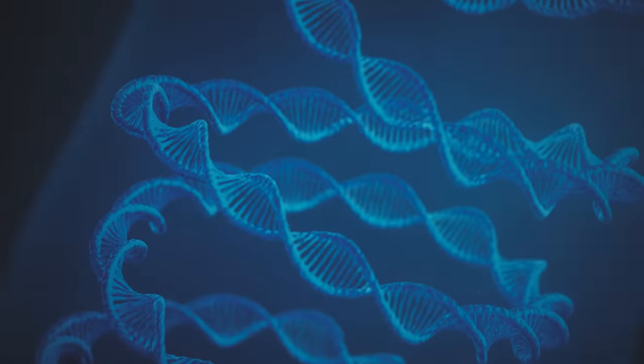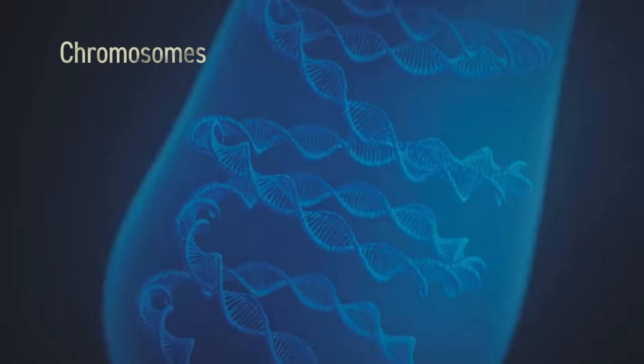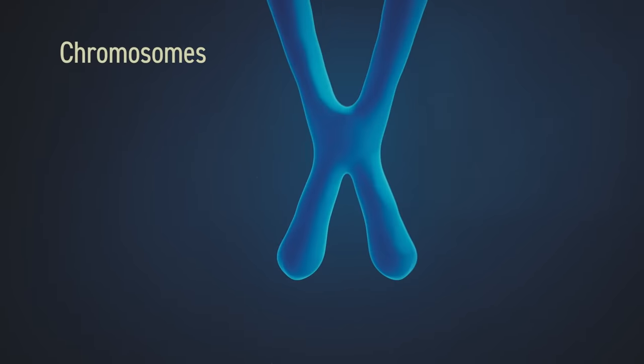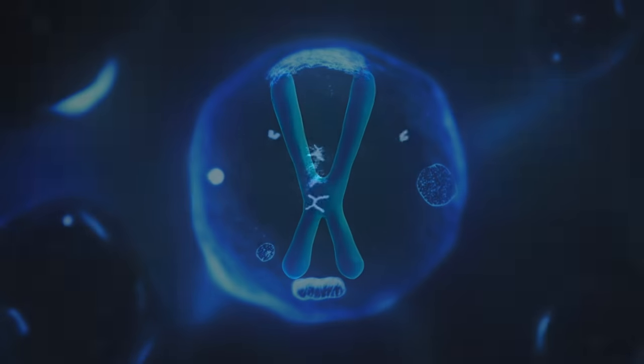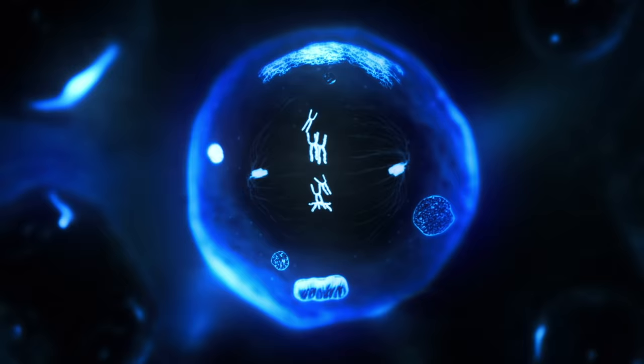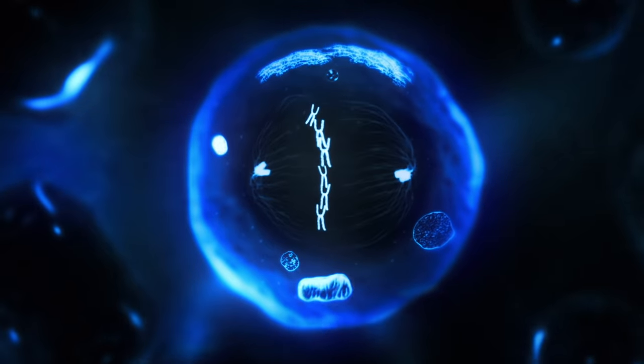DNA molecules are arranged in chromosomes, which are contained in the nucleus of each cell in an organism. Cells are like little factories, where instructions are read from the DNA and new proteins are made according to the instructions.